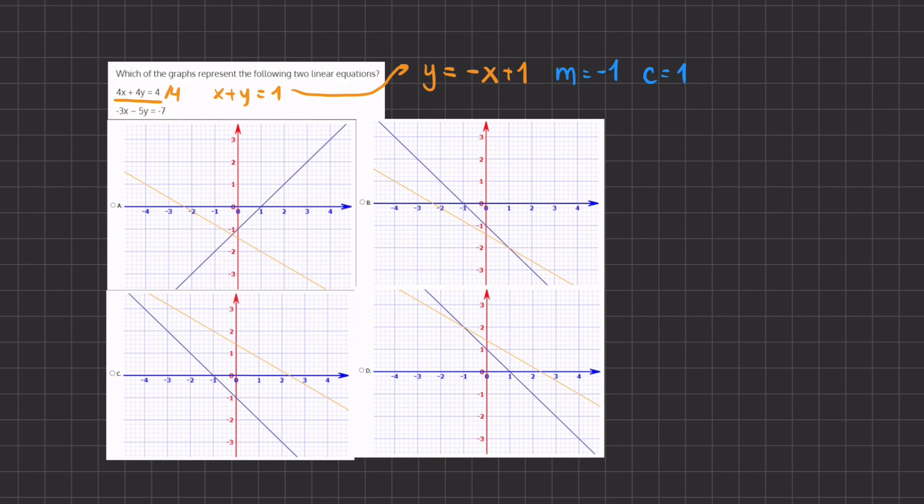Alright, so now let's do the same for our second equation. Let's rewrite it over here. And we want to isolate the y again, so we'll add 3x to both sides, and we are left with negative 5y equals 3x minus 7.